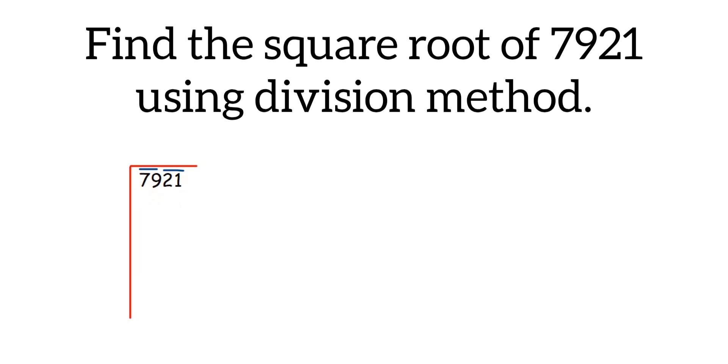The first divisor will be when you take a square of that number, it should be equal to 79 or less than that. In simple terms, you have to write the square number which is closer to 79 or equal to 79. 79 is not a perfect square number, so we'll try to find the number which is less than that.